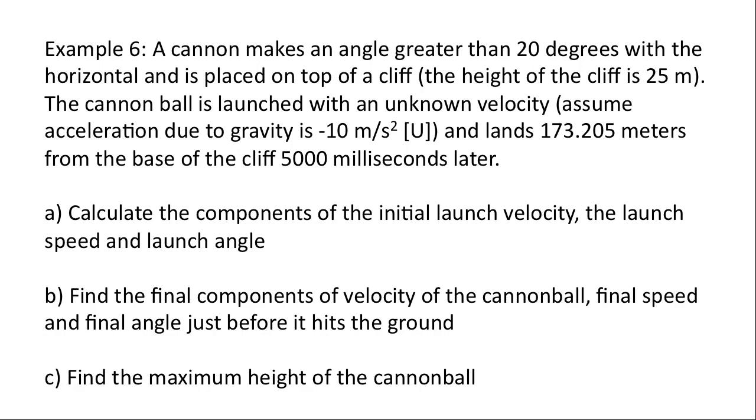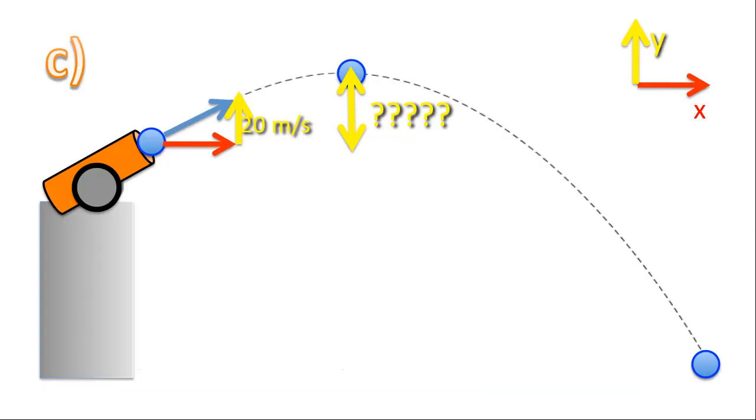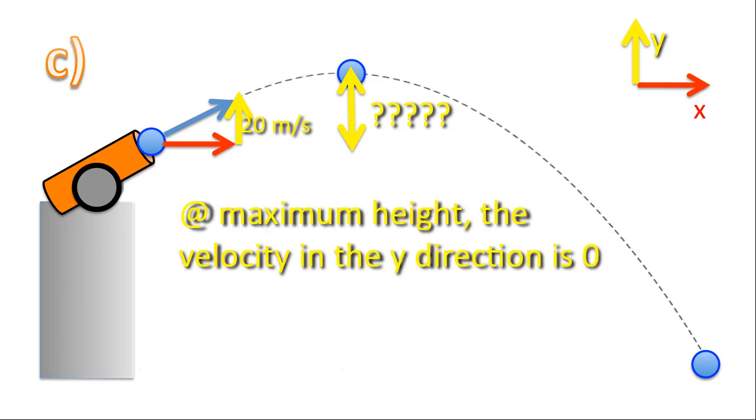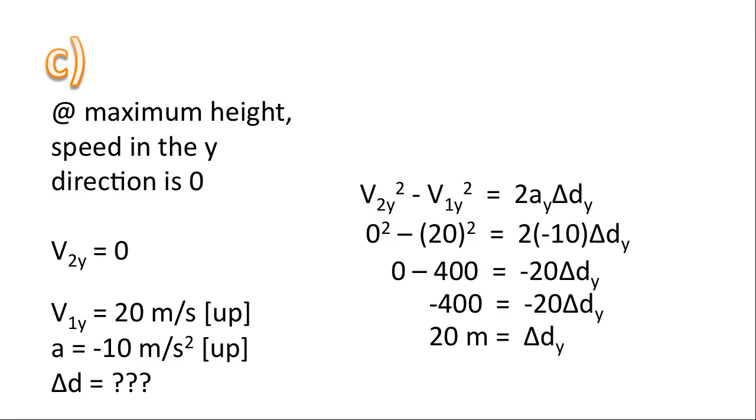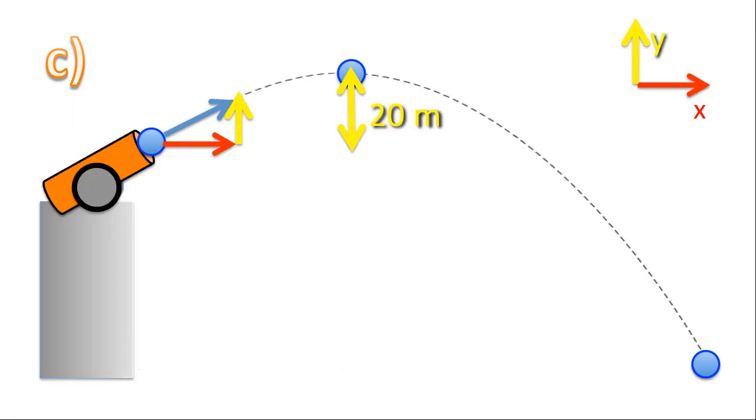And finally, c. Find the maximum height of the cannonball. Well, to get maximum height, we're going to have to look at information in the y direction. And that's what we're looking for. That distance drawn there. Remember, at maximum height, the velocity in the y direction is zero. This is very important that you note that. It's still moving in the x direction, but in the y direction, it's no longer moving upwards or downwards at peak height. All right, pause the video right now and see how far you can get with this. All right, so let's see. Let's see our variables. Well, there they are. We know v2y is zero. There's v1y and the acceleration. We're looking for the displacement. There's the equation we're going to use, a classic equation in physics. And there's the answer for displacement in the y direction or maximum height. There it is listed.